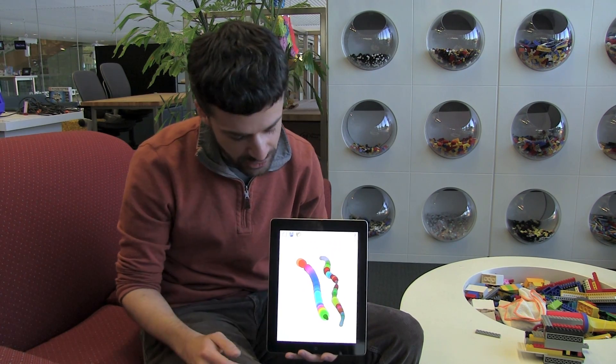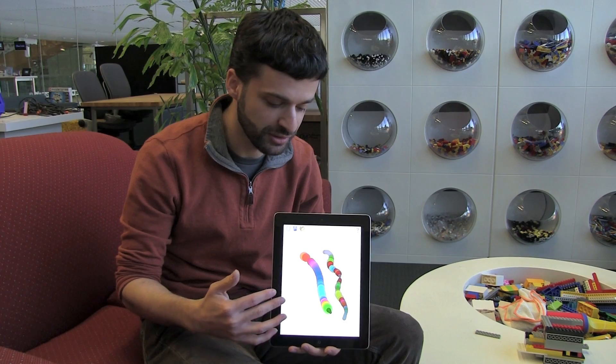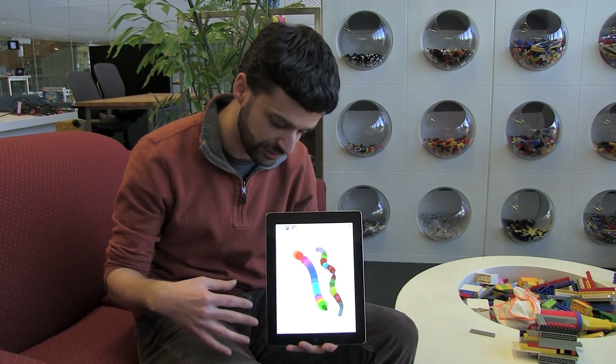So I'm getting different colors because Singing Fingers is tracking my pitch and turning it into different colors.